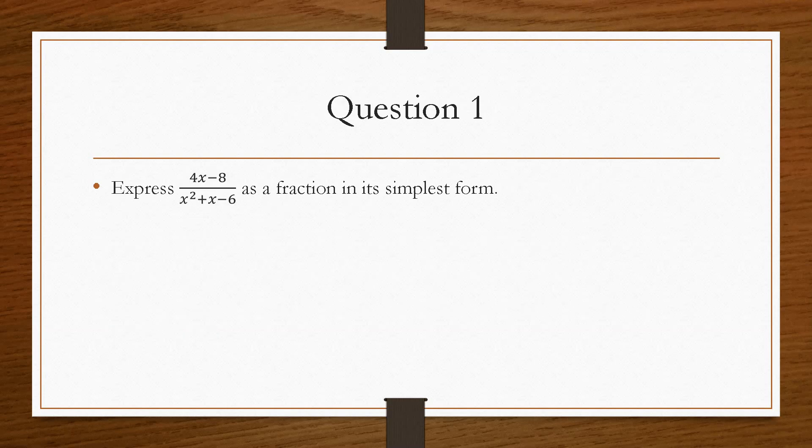So question number one says express 4x minus 8 divided by x squared plus x minus 6 as a fraction in its simplest form. So it is a fraction already, however it wants it in its simplest form. So that means that we are probably going to have to factorise the top and the bottom, but we'll do them individually.